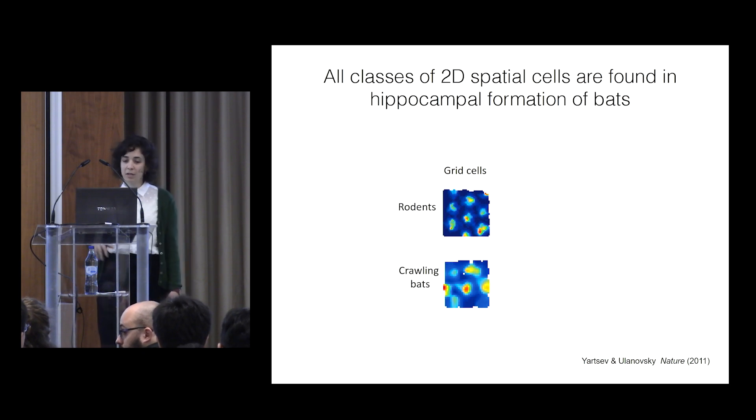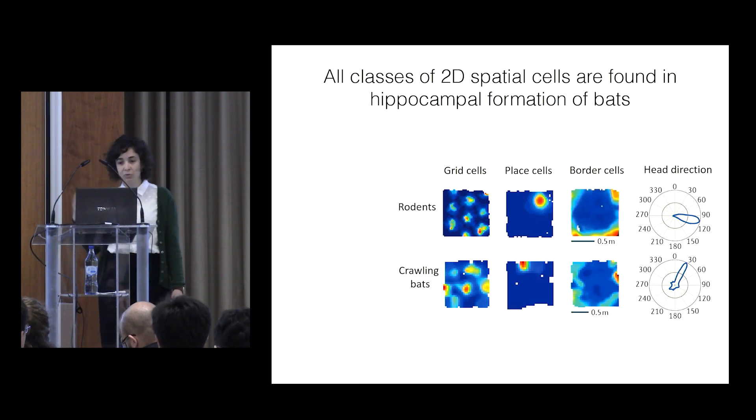Our lab has shown that in 2D, when bats crawl, there are grid cells, 2D grid cells in crawling bats, and also all the rest of the 2D spatial cells found in rodents. In 2D, things work well.